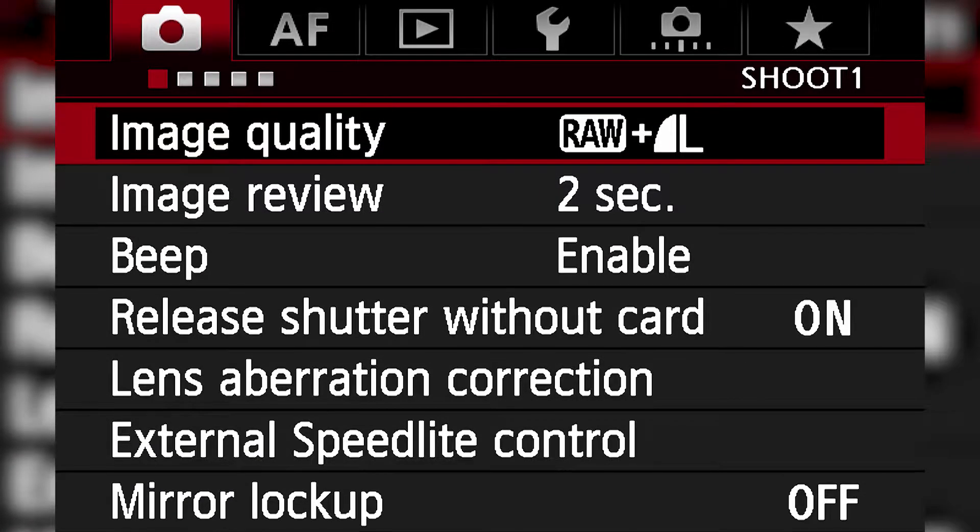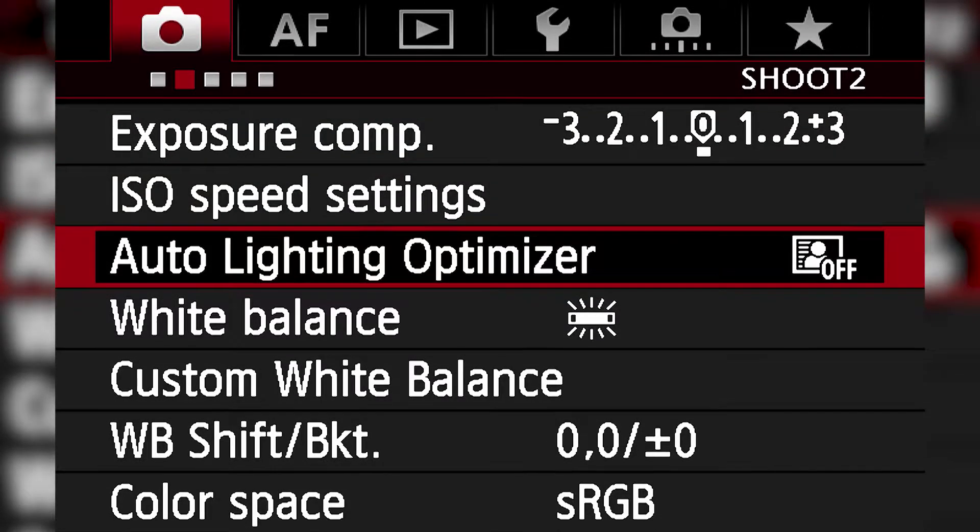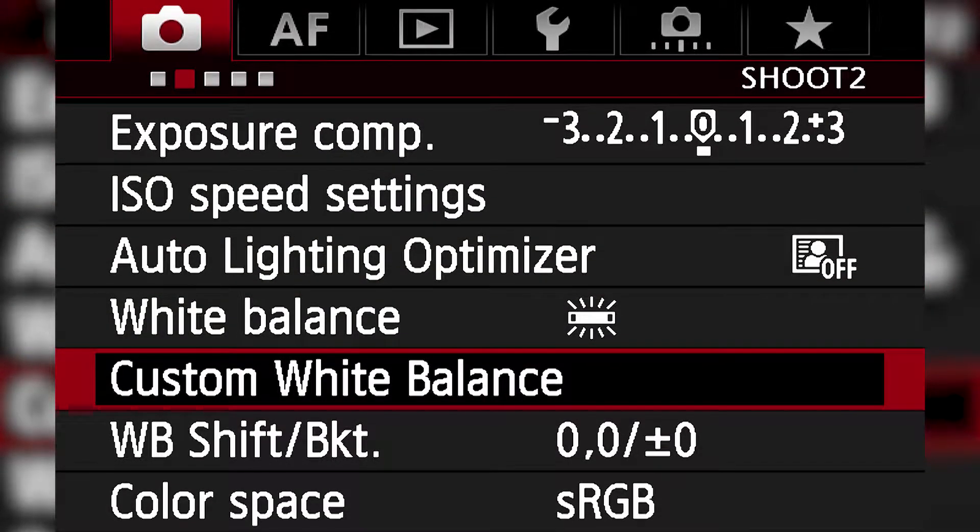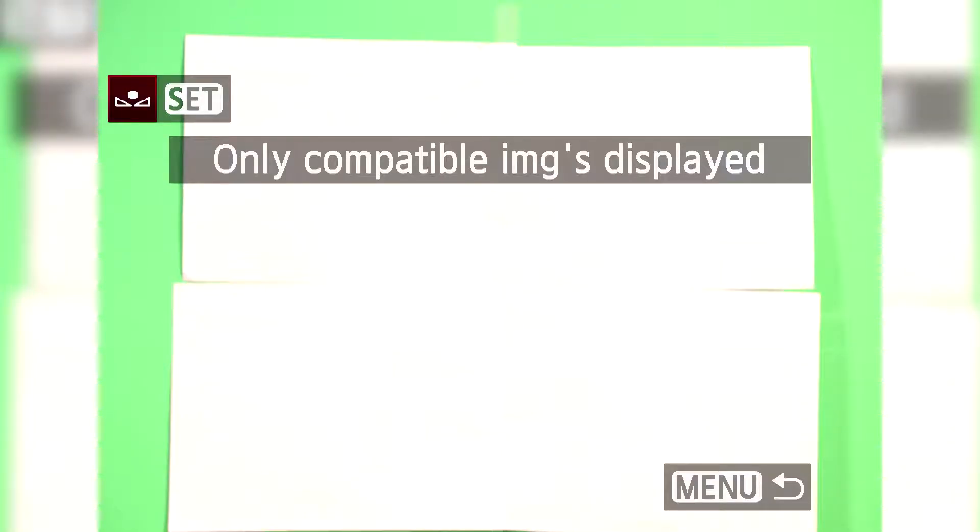On the second page of the shooting menu, there are three white balance options. To set a custom white balance, scroll down to the custom white balance option and click the button Set. This will show the last image taken on the camera.